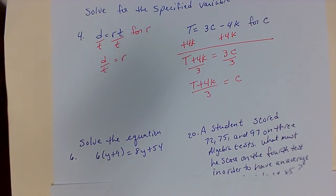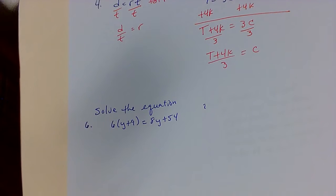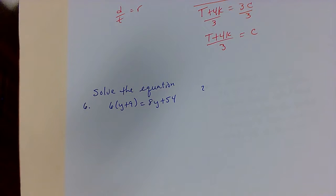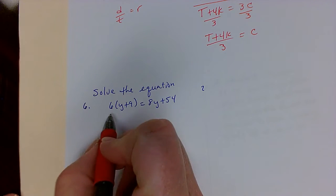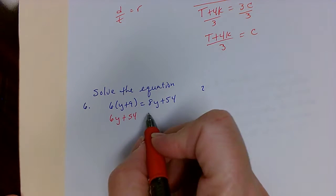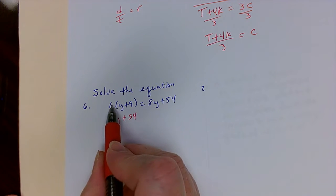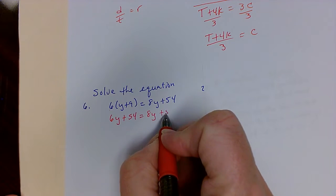The next equation we're going to solve is this one. If you're in the class, you can follow along with the numbers. The first thing I need to do is distribution. That gives me 6y plus 54, because 6 times y is 6y and 6 times 9 is 54, equals 8y plus 54.